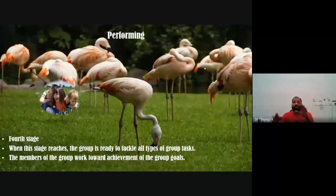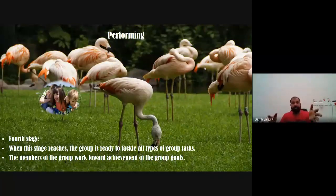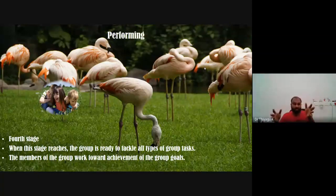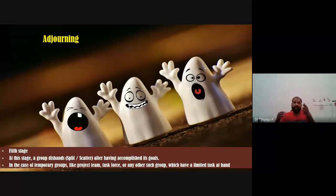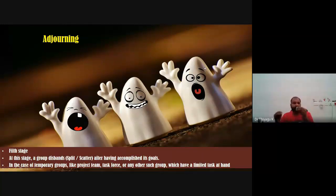In the norming stage, group members agree on standards to guide behavior in the group; members begin to take greater responsibility for their own group and relationships while the authority figure becomes more relaxed. The performing stage is a fully functional group where members see themselves as a group and get involved in the task — each member involves themselves 100%, the authority figure is seen as part of the group. The last stage, adjourning, represents when the group disperses after accomplishing its goals. Temporary groups like project work or task forces immediately leave after task completion.